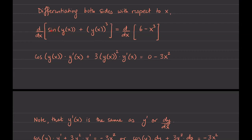The derivative of sine of y of x is given by chain rule because we have a composition of functions. The derivative of the outside will be cosine, keeping the inside the same — so cosine of y of x — times the derivative of the inside. The derivative of y of x is simply y prime of x. The derivative of y of x cubed, using chain rule: bring the power down, so 3 comes down, keep the inside the same, times the derivative of the inside, which is y prime of x. The derivative of 6 is 0, and the derivative of negative x cubed is negative 3x squared.